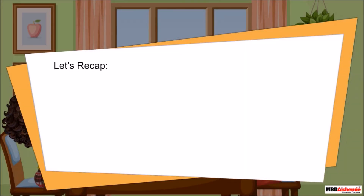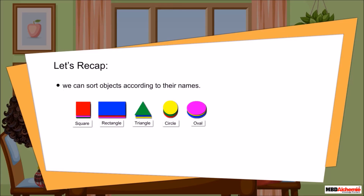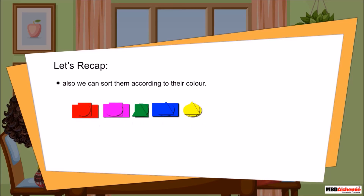Let's recap. We can sort objects according to their names. Also, we can sort them according to their colors.